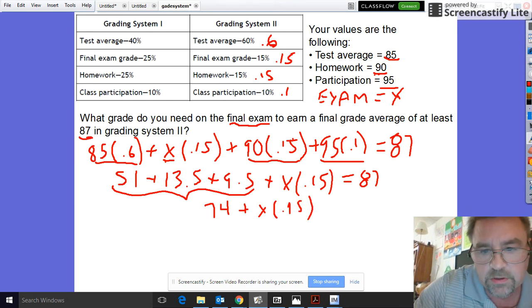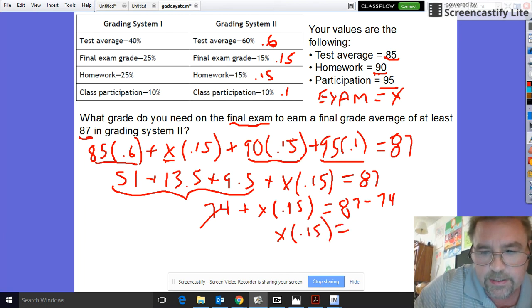Equal 87, so you're going to subtract 74 from both sides. So now you're just left with the variable term on one side and 13 on the other side.